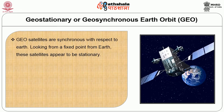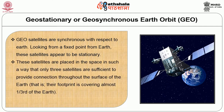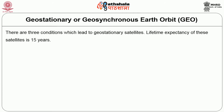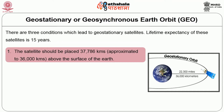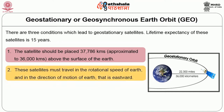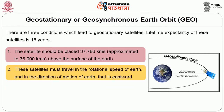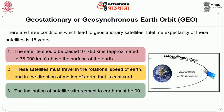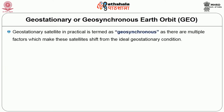GEO satellites are synchronous with respect to earth. Looking from a fixed point from earth, these satellites appear to be stationary. These satellites are placed in space in such a way that only three satellites are sufficient to provide connections throughout the surface of the earth. The orbit of these satellites is circular. There are three conditions which lead to geostationary satellites: the satellite should be placed approximately 36,000 km above the surface of the earth; these satellites must travel at the rotational speed of earth and in the direction of motion of earth, that is eastward; and the inclination of satellite with respect to the earth must be 0 degrees.